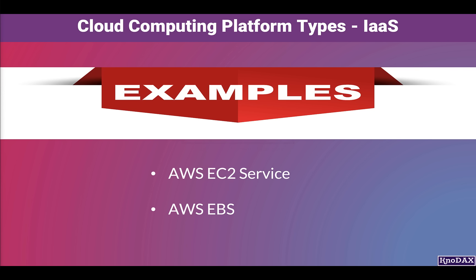Another example of Infrastructure as a Service related to networks is AWS Internet Gateway, which is used to manage internet access for the servers launched on AWS. This is also an IaaS type of service, as it provides network as a service. Networks are also technology infrastructure components.